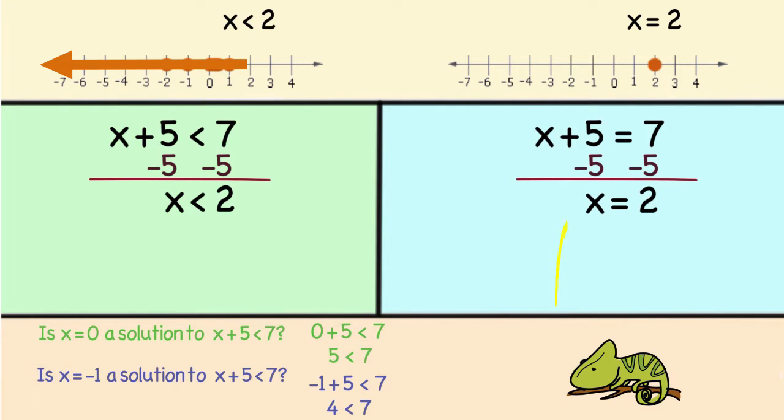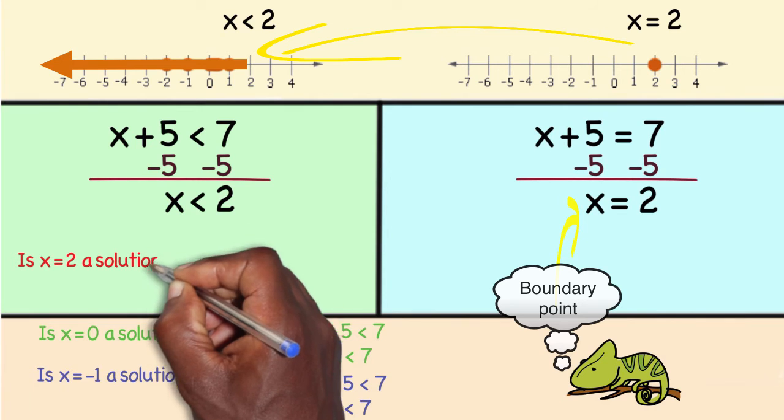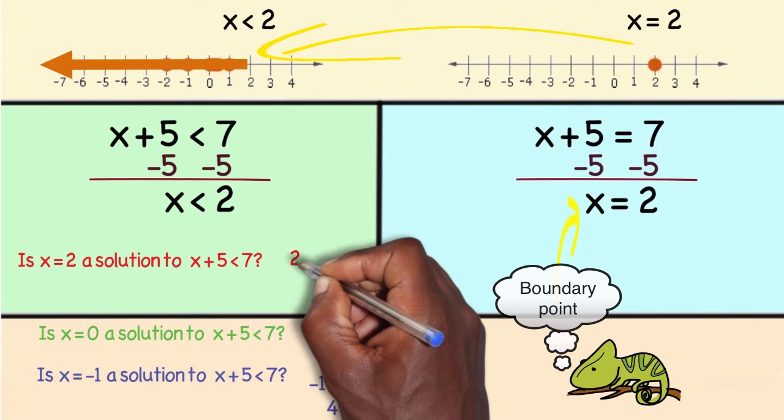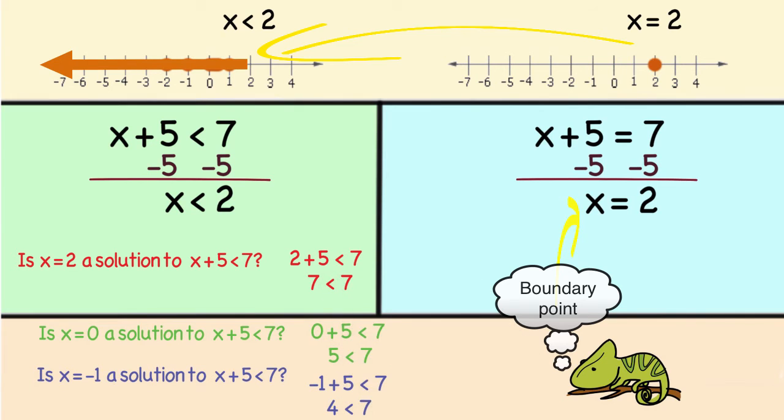In my equation on the right 2 represents what's called the boundary point. In other words it separates the right answers from the wrong answers. So here where there's a 2 I'm not going to shade in the 2 because I know 2 does not work. And why does 2 not work? Because if I plug in 2 to my equation, 2 plus 5 is 7, and 7 is not less than 7. So that is false.